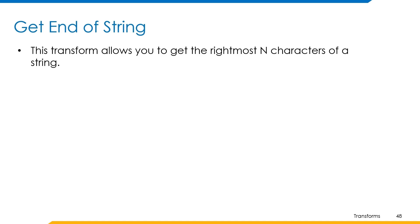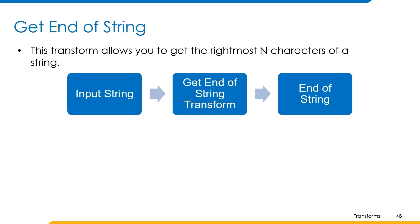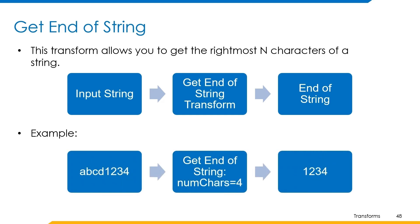Get end of string transform is used as an out-of-box rule transform provided through SailPoint's cloud services utility role. This transform allows you to get the rightmost end characters of the string. We'll be passing input either implicitly or explicitly and the number of characters to retrieve as input, and will receive the rightmost end characters as output. For example, an input abcd1234 with number of characters set to 4 returns the output 1234.